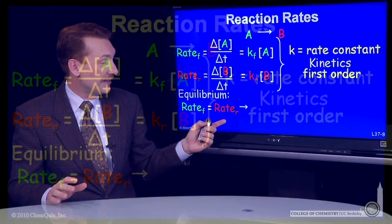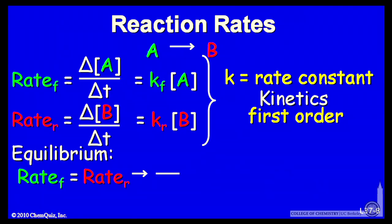And if we do that, what we can do is solve for the concentration of B over the concentration of A. And when we do that, we find the concentration of B over the concentration of A is equal to the rate constant for the forward reaction over the rate constant for the reverse reaction.